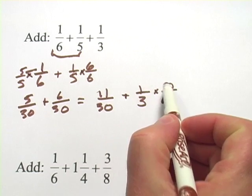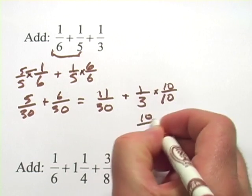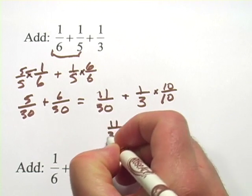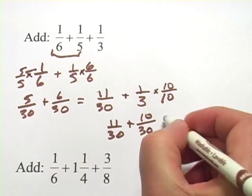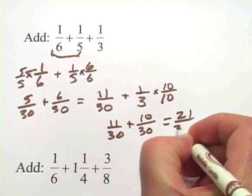Now I do the multiplication. I've got 1 times 10 is 10, 3 times 10 is 30. So I've got 11 thirtieths plus 10 thirtieths. And that is 21 thirtieths.